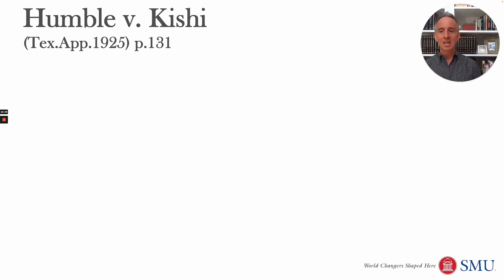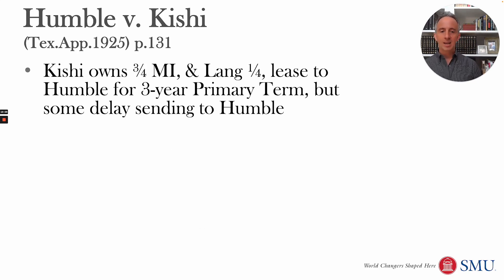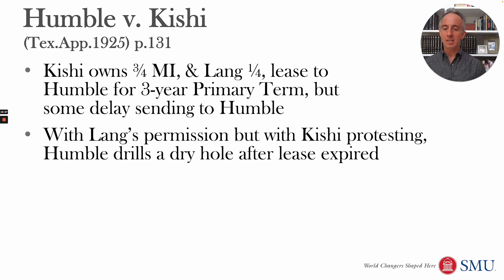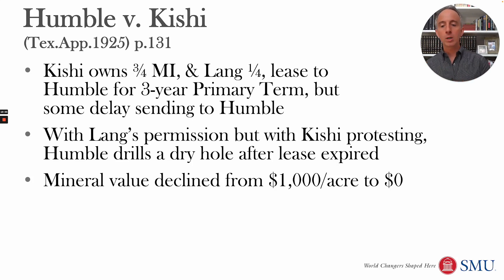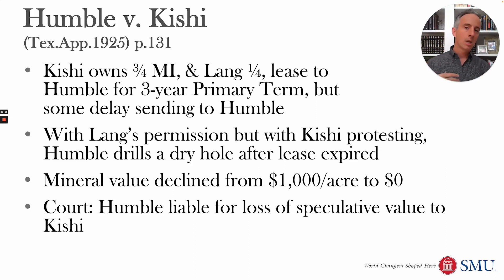The example case is Humble v. Kishi, a Texas case from 1925, on page 131. Kishi and Lang leased to Humble for a three-year primary term, but a delay in delivering the lease led Humble to believe the term was longer than it was. With Kishi — the three-quarter mineral interest owner — protesting, Humble drilled a dry well after the lease had expired. As a result, Kishi's land dropped from $1,000 per acre to zero in value, and the court awarded that loss of speculative value as damages.